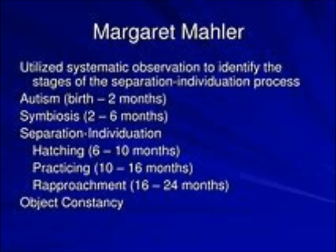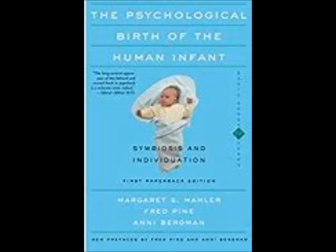The autistic period from zero to two months consists of a primitive hallucinatory disorientation in which the need for satisfaction seems to belong to his or her own unconditional omnipotent autistic orbit — Masterson, page 10. Basically, there is a barrier that protects the infant's psyche from being overwhelmed.